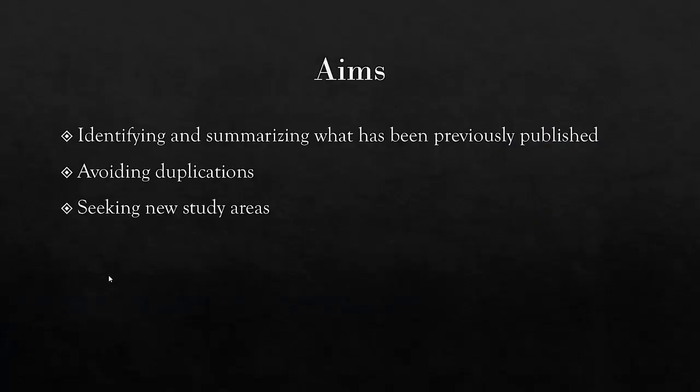First of all, let's look at the aims of a narrative review. First and foremost, it is about identifying and summarizing what has been previously found in literature. Because of the huge amount and rapid rate of publications, we have an abundance of evidence. Summarizing it is very important for the scientific community to get an overview of the state-of-the-art developments in that field. As a result, new study areas will be identified, which is very good for the development in this field of research.